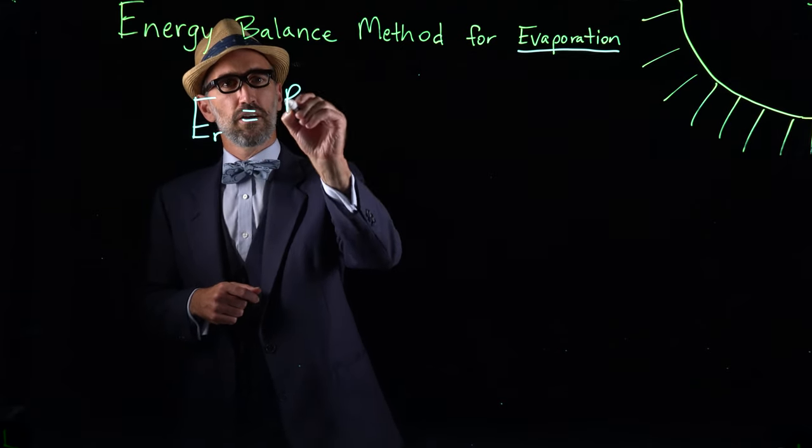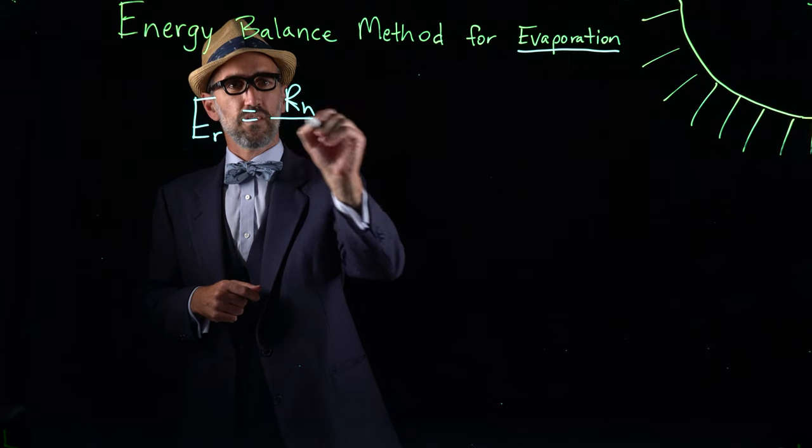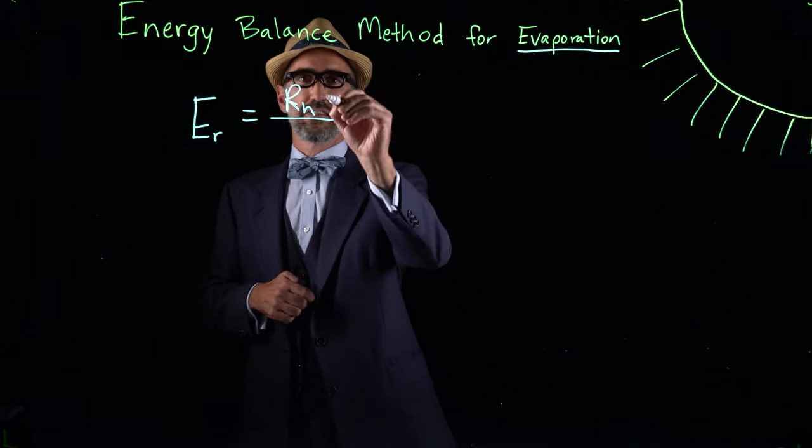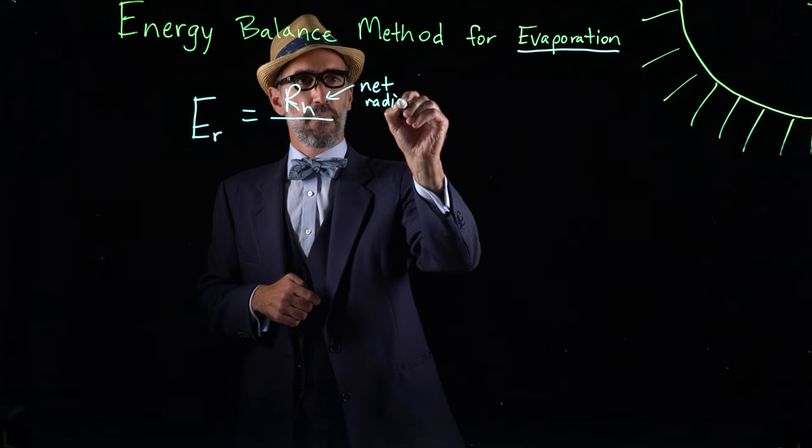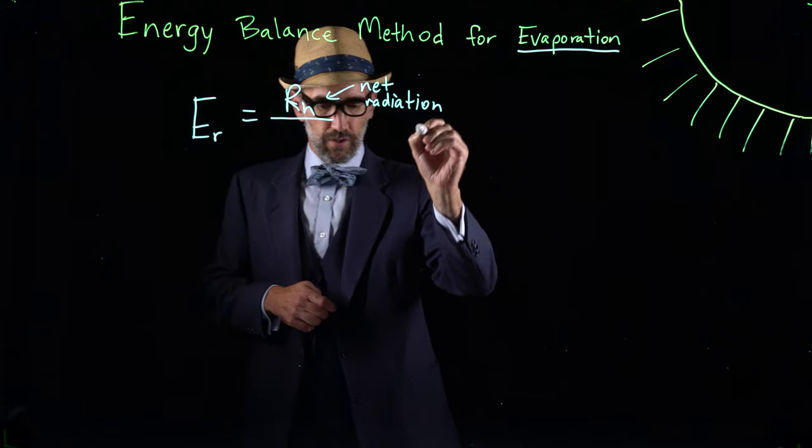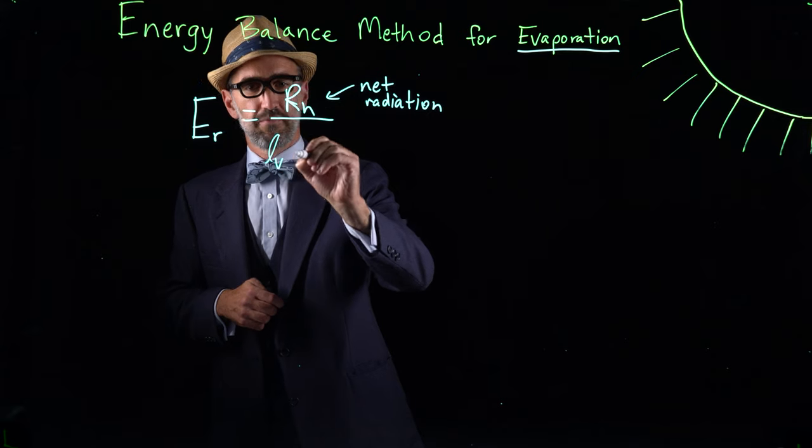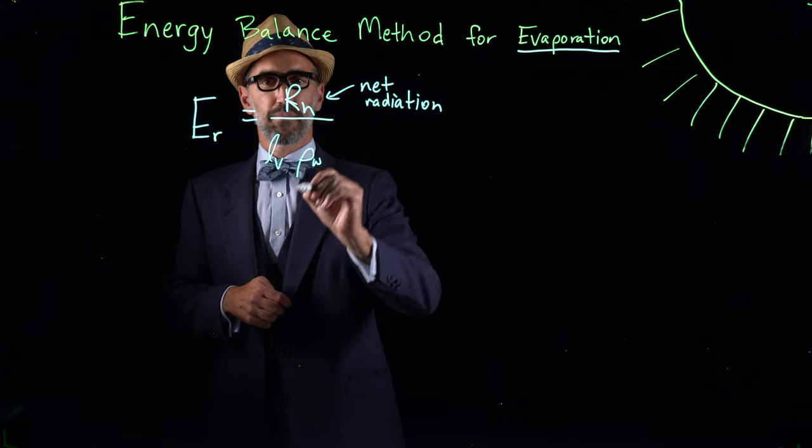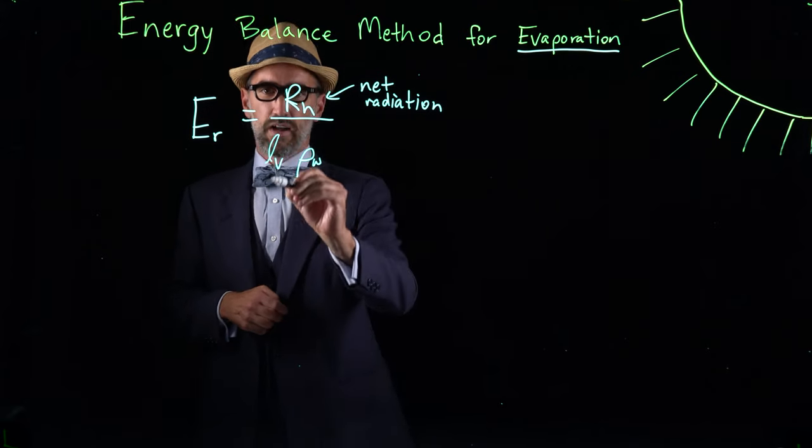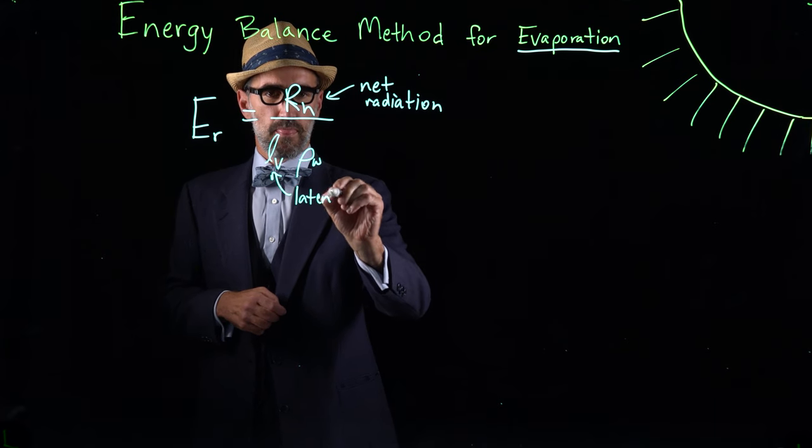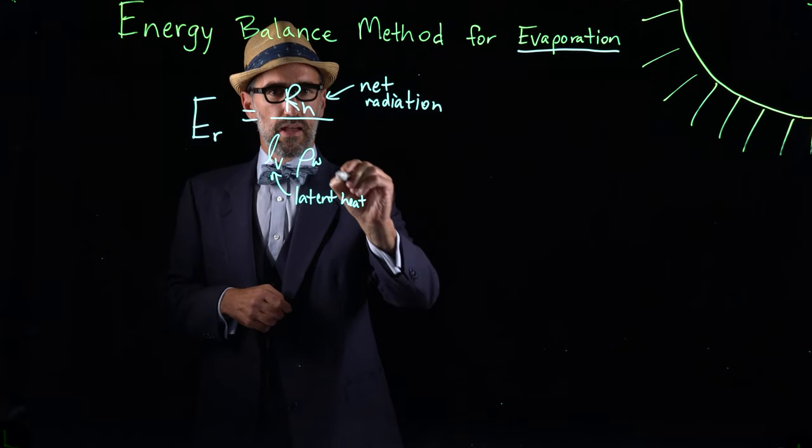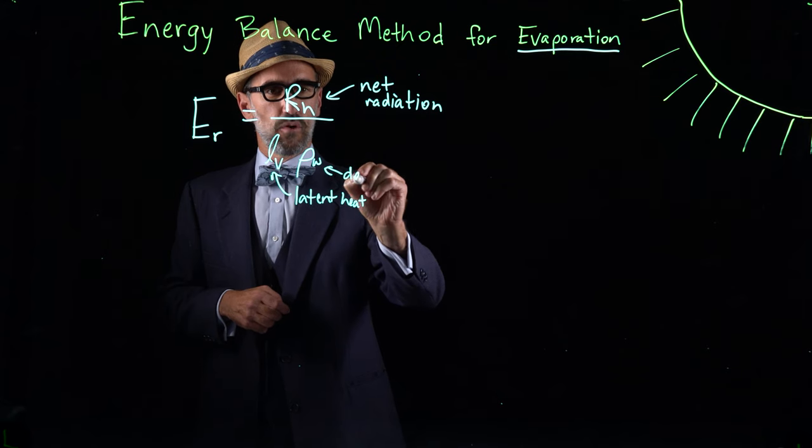equals R sub N, where R sub N is the net radiation, over L sub V and rho sub W, where L of V is the latent heat, and rho W is the density of water.